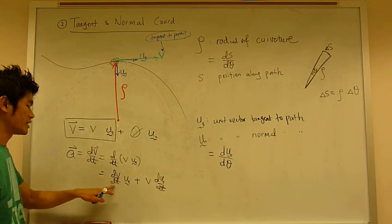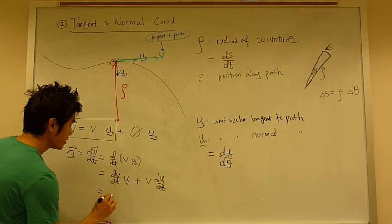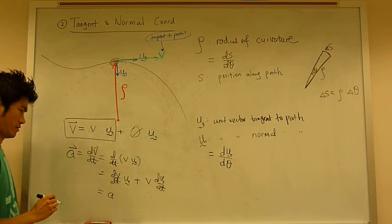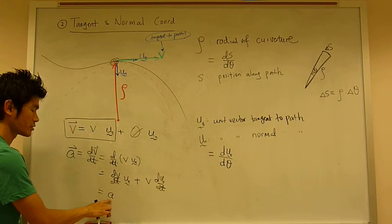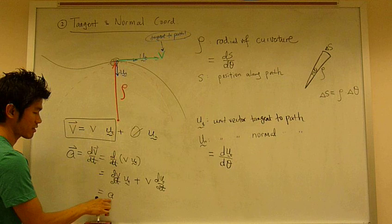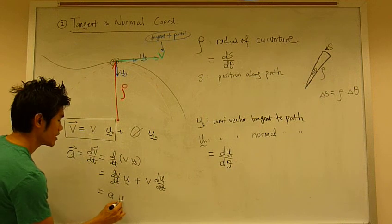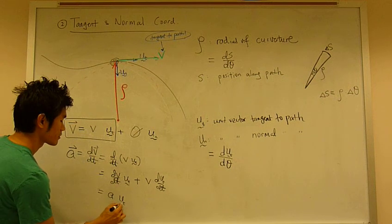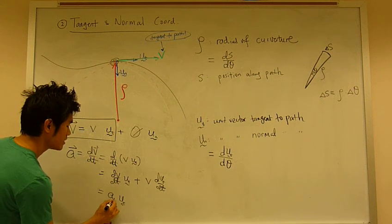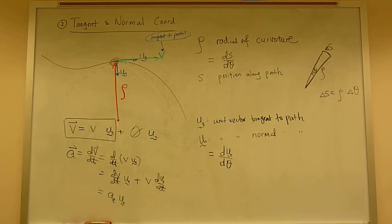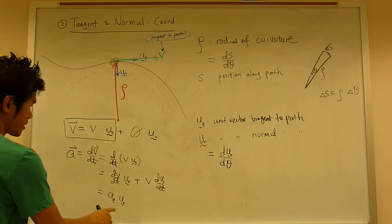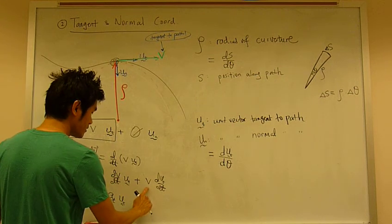Now, dv/dt is simply the acceleration, the acceleration which is tangent to the path. So simply just a. Let's call it at, or tangential component. And this right here.